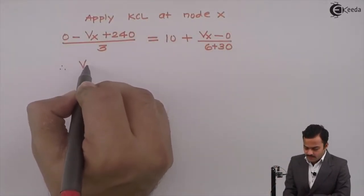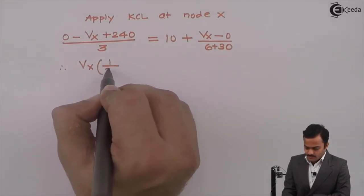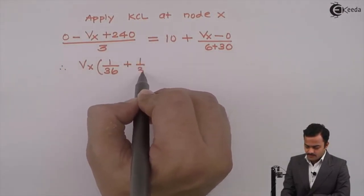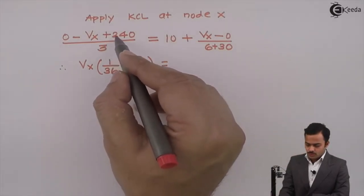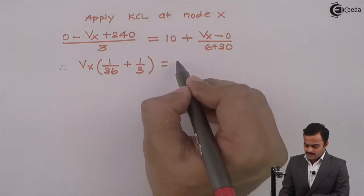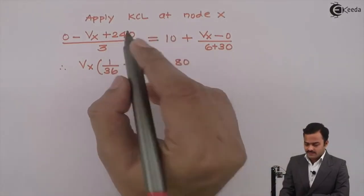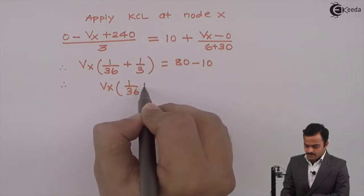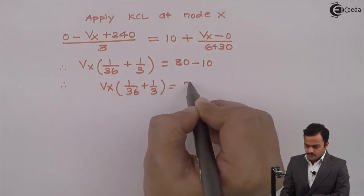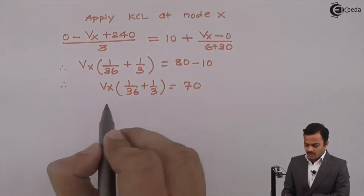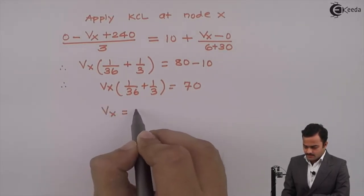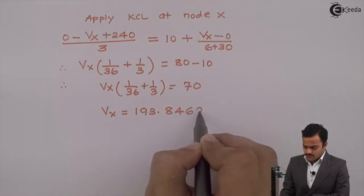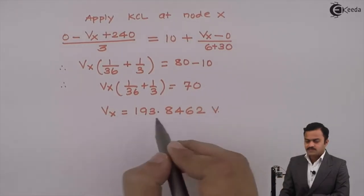If I rearrange the terms, I will get Vx times 1 by 36 plus 1 by 3 equal to 240 divided by 3 is 80 and 10, I will take this side minus 10. Finally, I will get Vx times (1/36 + 1/3) equal to 70. If I solve this, I will get Vx as 193.8462 volt. It is Vx.